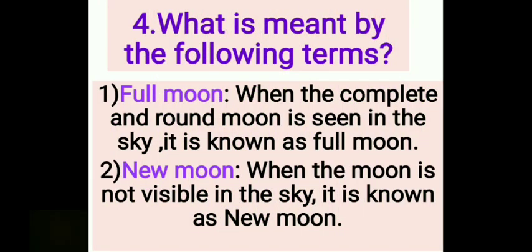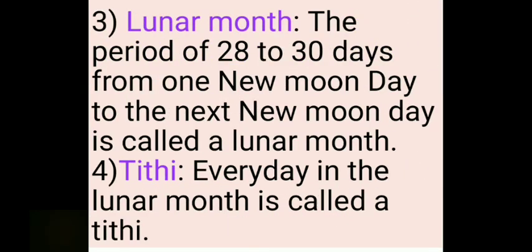What is meant by the following terms? Full Moon: When the complete and round moon is seen in the sky, it is known as Full Moon. New Moon: When the moon is not visible in the sky, it is known as New Moon. Lunar Month: The period of 28 to 30 days from one new moon day to the next new moon day is called a Lunar Month. Tithi: Every day in the lunar month is called a Tithi.